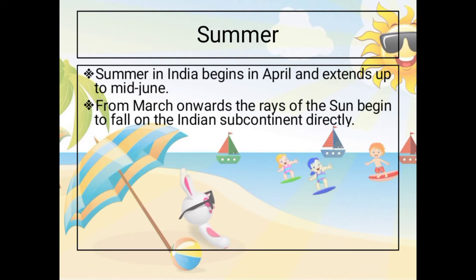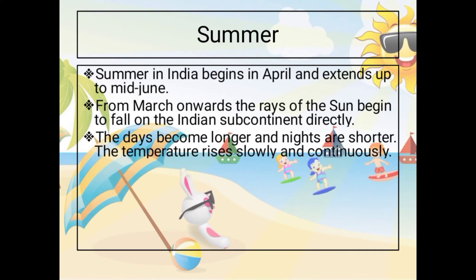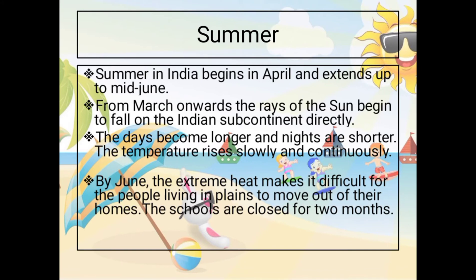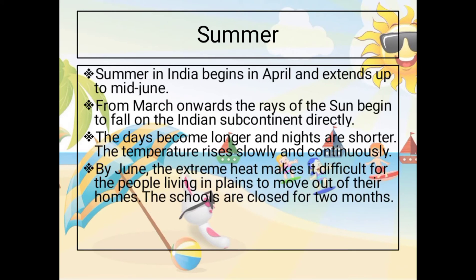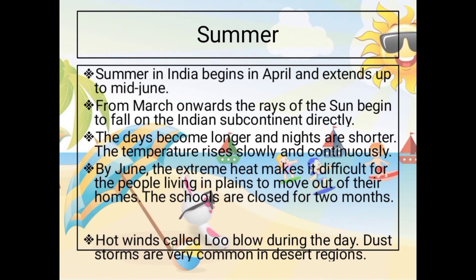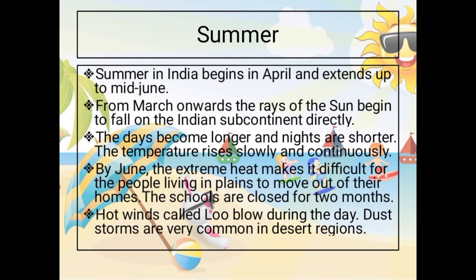The days become longer and nights are shorter. The temperature rises slowly and continuously. By June, the extreme heat makes it difficult for people living in plains to move out of their homes. The schools are closed for two months. Hot winds called loo blow during the day. Storms are very common in desert regions.